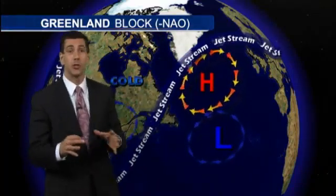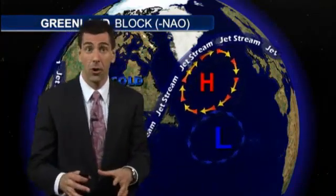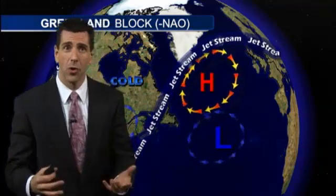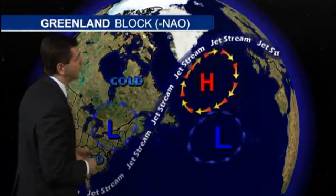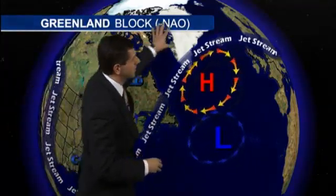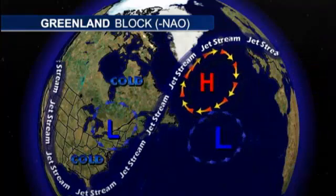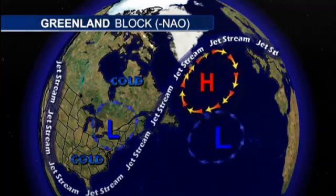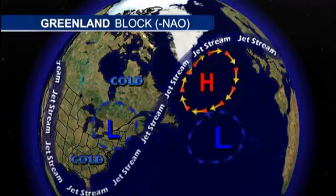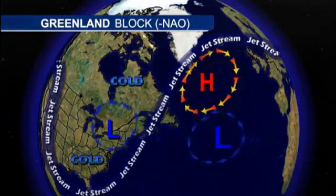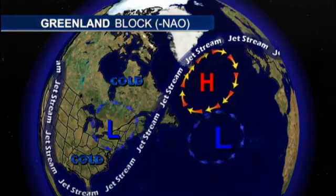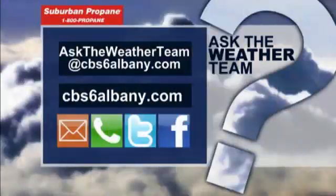It's kind of interesting — there's some research being done now trying to relate the diminishing Arctic sea ice to these blocks, and whether that impacts the degree of blocking that can occur and how strong the blocks become. There's some suggestion that a lack of sea ice actually supports more blocking patterns and stronger blocking patterns. So it'll be interesting to see over the next couple of years how that research pans out, because obviously that can have a big impact on causing colder weather across the eastern half of the country.